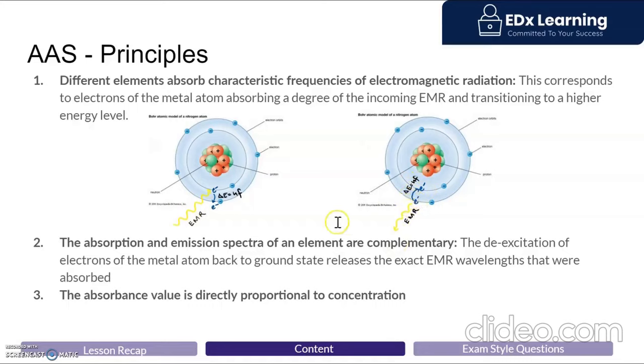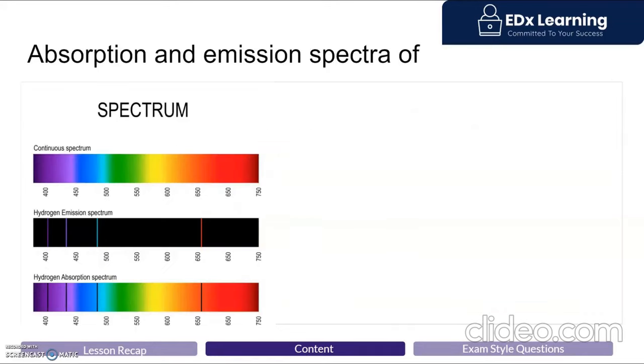The implication of this for chemistry is that the absorption spectra of an element is exactly complementary to its emission spectra, as you can see here. The same wave that was absorbed is re-emitted by a particular element. We've already highlighted that as absorbance increases, we can say the concentration of that metal cation in solution will also increase.